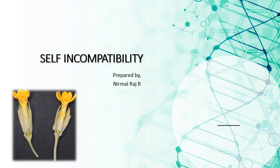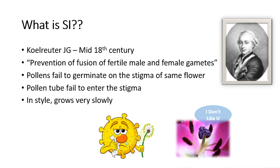Hello guys, today let's get into the topic of self-incompatibility. The concept of SI was given by Carl Luther in the mid 18th century. Before getting into the topic, we must be clear about what is pollination, self-pollination, and cross-pollination. Pollination is the process when pollen grains fall on the stigma, and the male and female get fused together in fertilization, resulting in seed production. In self-pollination this takes place in the same flower, but in cross-pollination it takes place in two different flowers. Self-pollination in nature is hindered by many mechanisms, one of which is this SI mechanism.